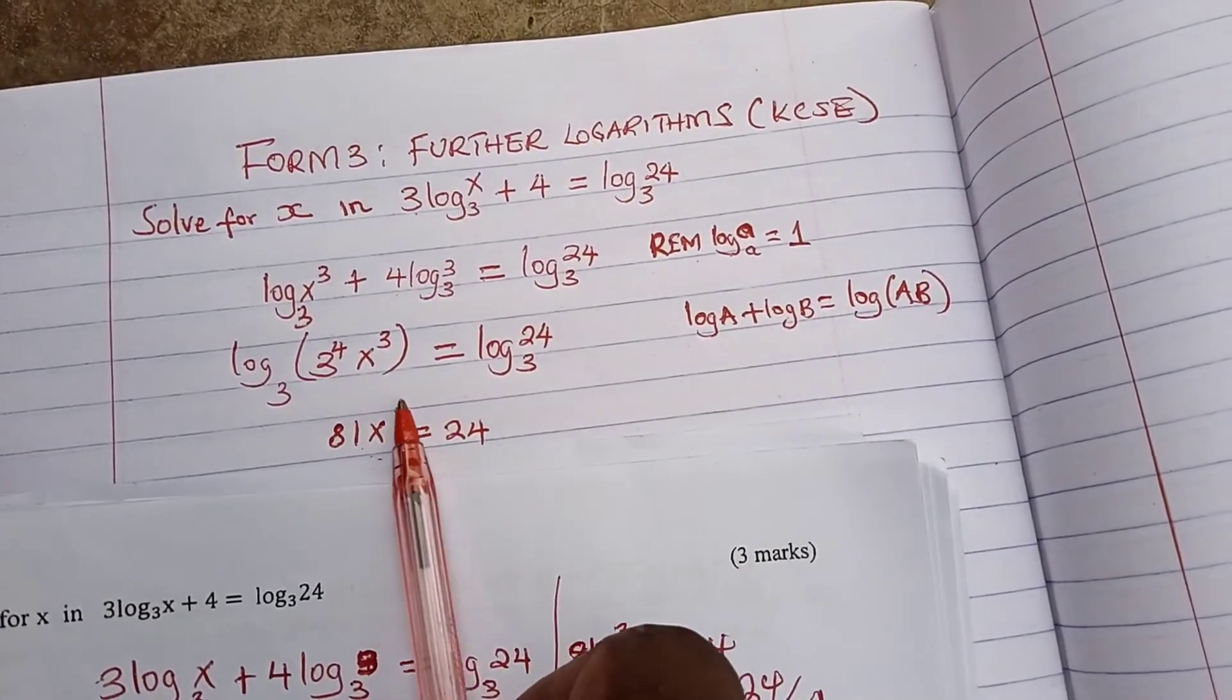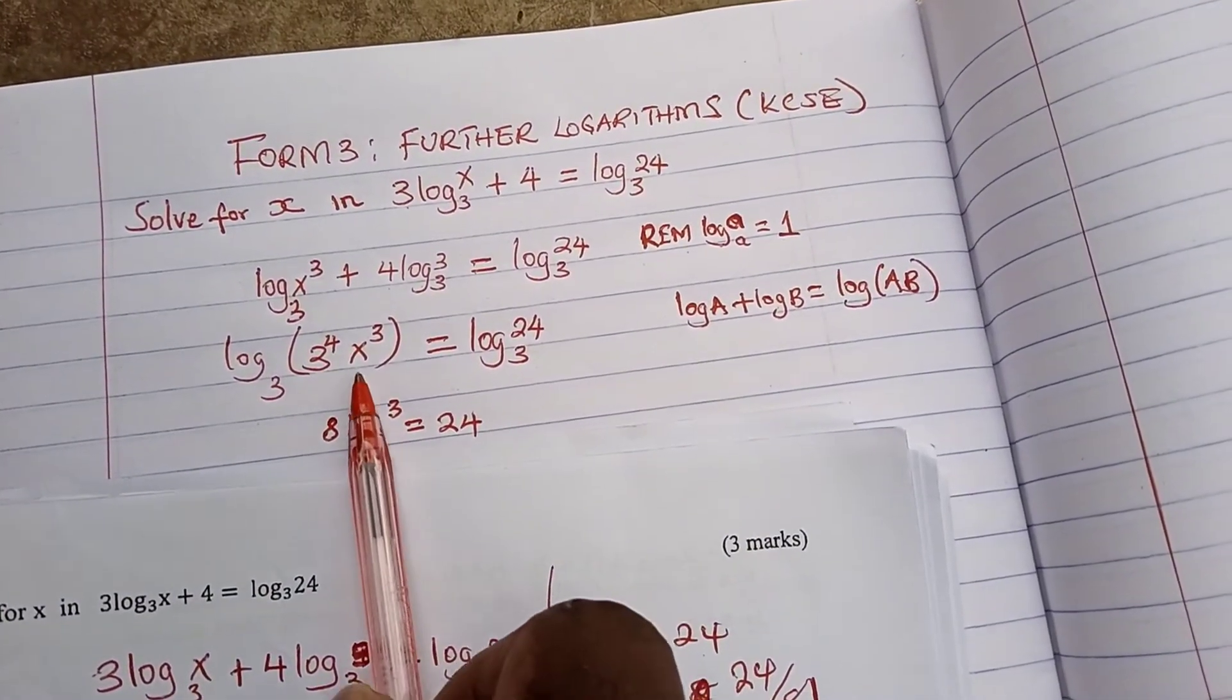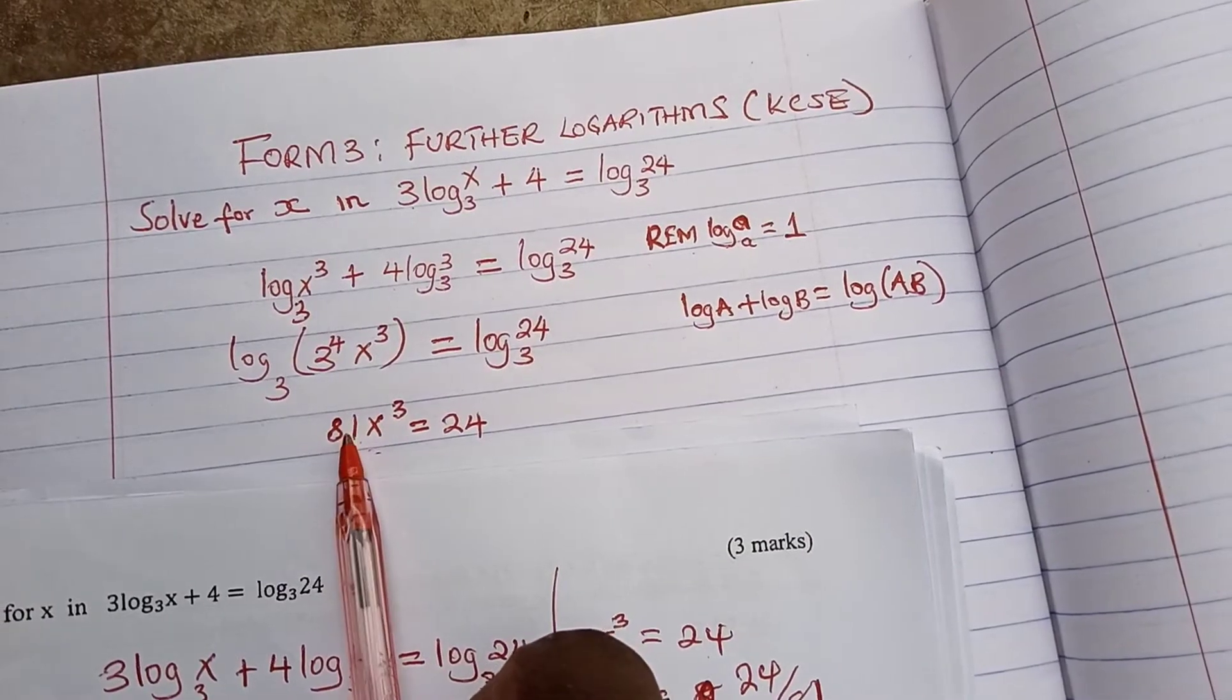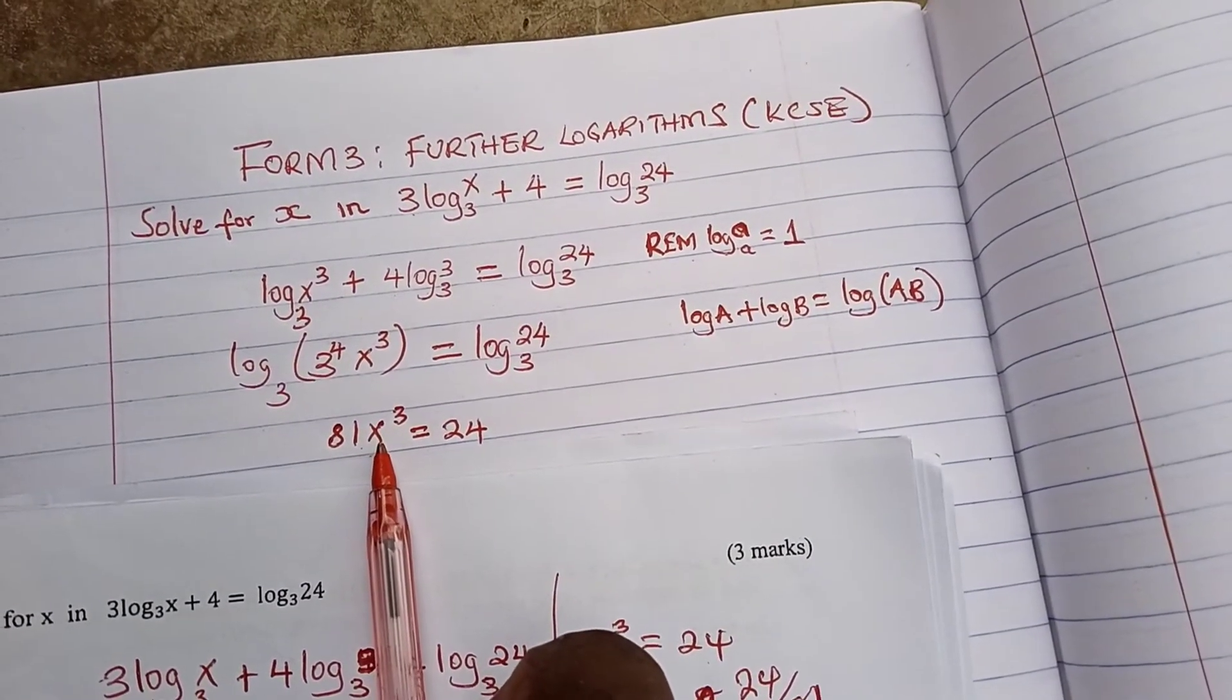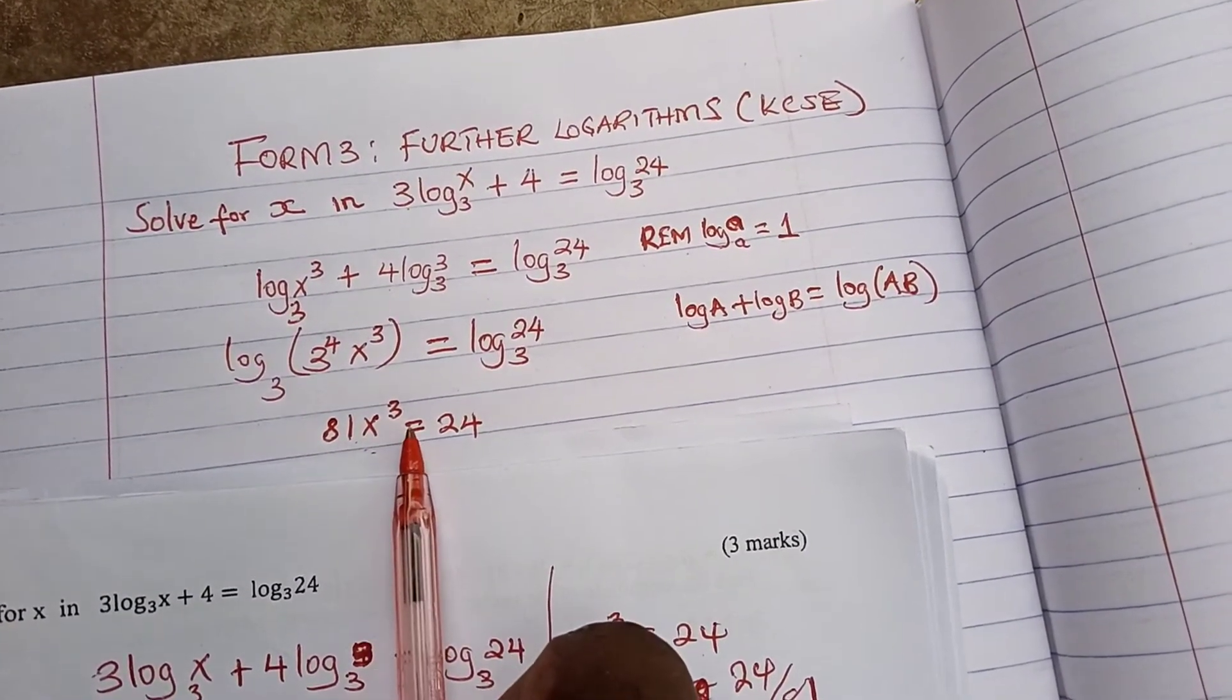Now at this point we are going to drop the logs and we will have now 3 to power 4, that is 81, times x to power 3, which is equal to 24.